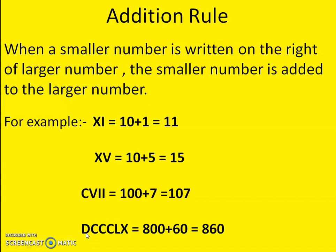Now D — what is D in Roman numerals? D is 500. Then 600: D is 500 and C is 100, so DC is 600. Adding another C gives 700, and another gives 800. So DCCC represents 800. Now L is 50 and X is 10, so 50 plus 10 is 60. Therefore, 860 is represented as DCCCLX in Roman numerals.